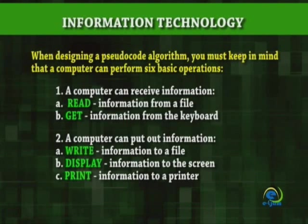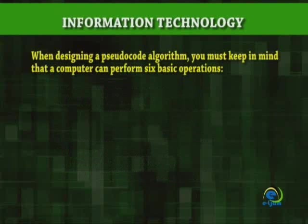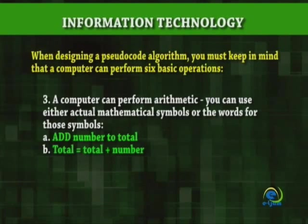Operation 2: A computer can put out information. A. Write information to a file. B. Display information to the screen. C. Print information to a printer. Operation 3: A computer can perform arithmetic. You can use either actual mathematical symbols or the words for those symbols.